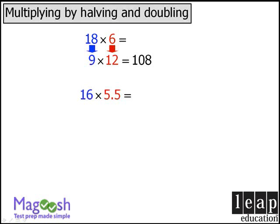Let's check another example. Here we can create a simpler product by taking our 16 and halving it to get 8, and taking our 5.5 and doubling it to get 11. Here we see that our product must be 88.